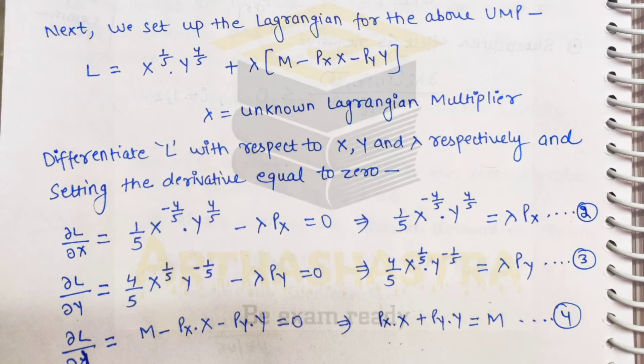Now differentiating the Lagrangian with respect to y, treating x as constant, we get: (4/5) x^(1/5) y^(−1/5) minus lambda times py. Setting the derivative equal to zero gives us equation number 3: (4/5) x^(1/5) y^(−1/5) = lambda × py. Differentiating with respect to lambda and setting it equal to zero gives us the budget constraint: m − px·x − py·y = 0, which is equation number 4.